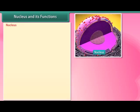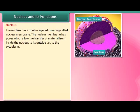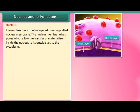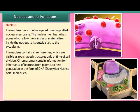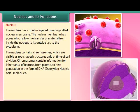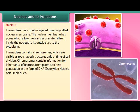The nucleus has a double-layered covering called the nuclear membrane. The nuclear membrane has pores which allow the transfer of material from inside the nucleus to the cytoplasm. The nucleus contains chromosomes, which are visible as rod-shaped structures only at the time of cell division. Chromosomes contain information for inheritance of features from parents to the next generation, in the form of DNA — deoxyribonucleic acid molecules.